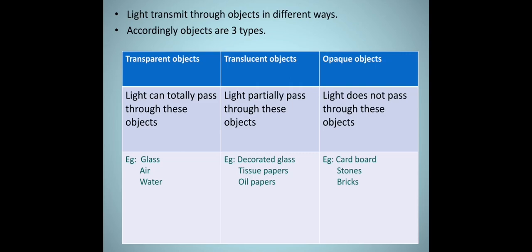Light transmits through objects in different ways. Accordingly, objects are three types: transparent objects, translucent objects, and opaque objects. Light can totally pass through transparent objects — examples are glass, air, and water. Light partially passes through translucent objects — examples are decorated glass, tissue paper, and oil paper. Light does not pass through opaque objects — examples are cardboard, stones, and bricks.